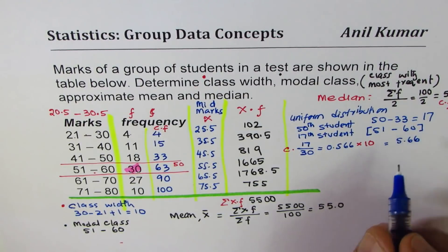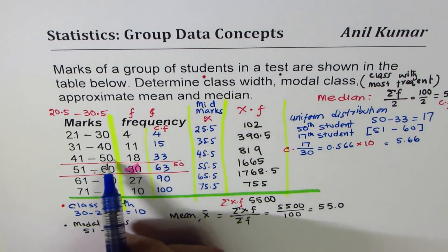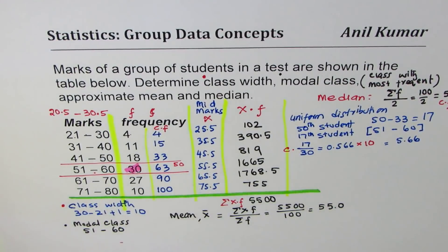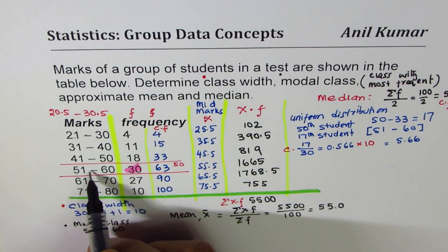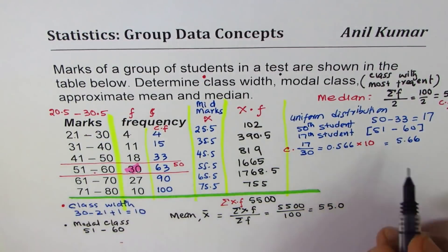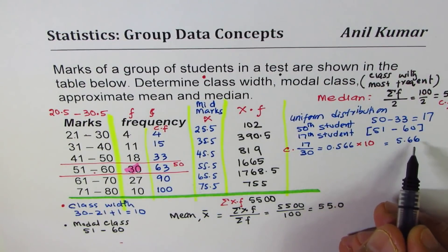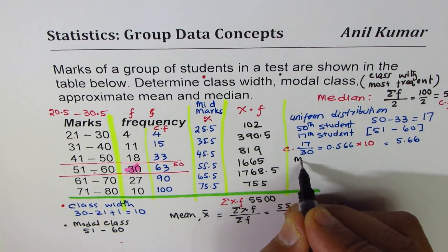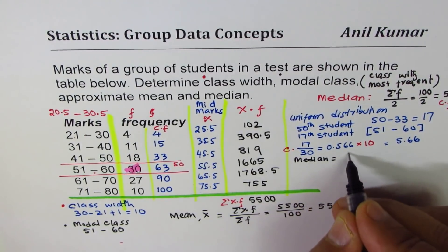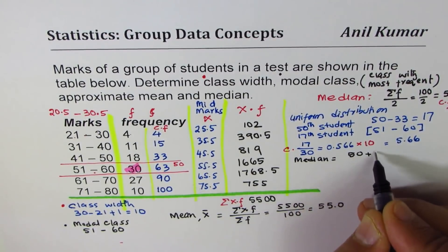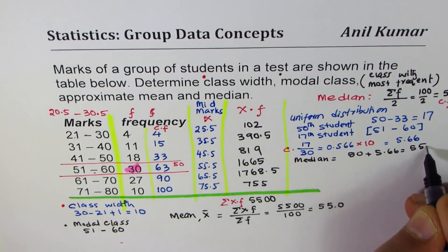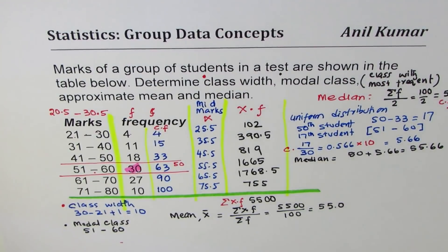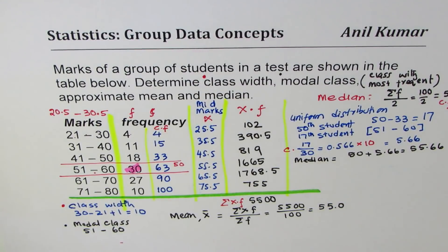So the median lies 5.66 more than 50. The median lies after 50. It is not 51, not 52, somewhere in the middle. How much away? 5.66 away. 50 plus 5.66 which is 55.66. That is how you can find the median without using a formula.